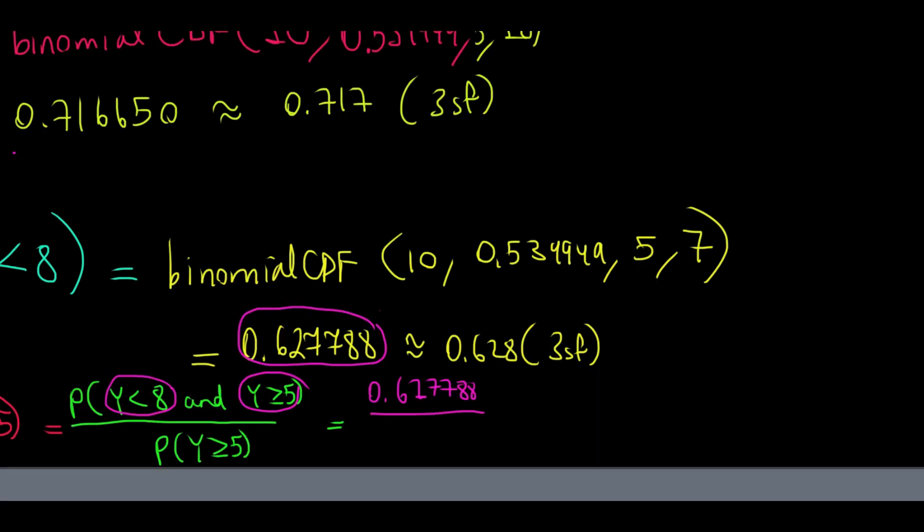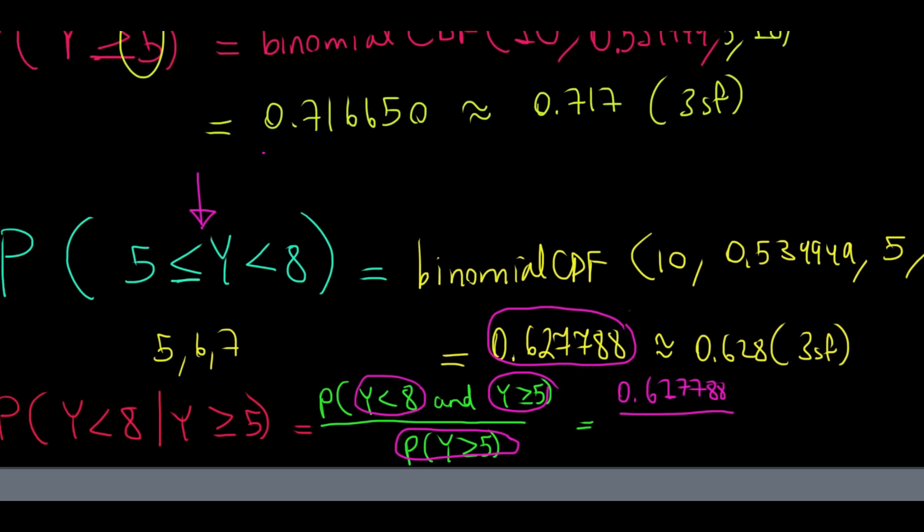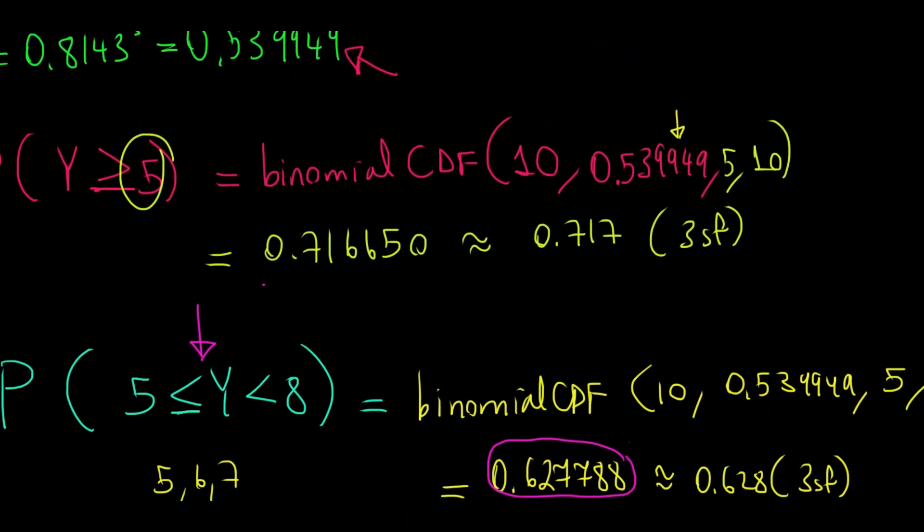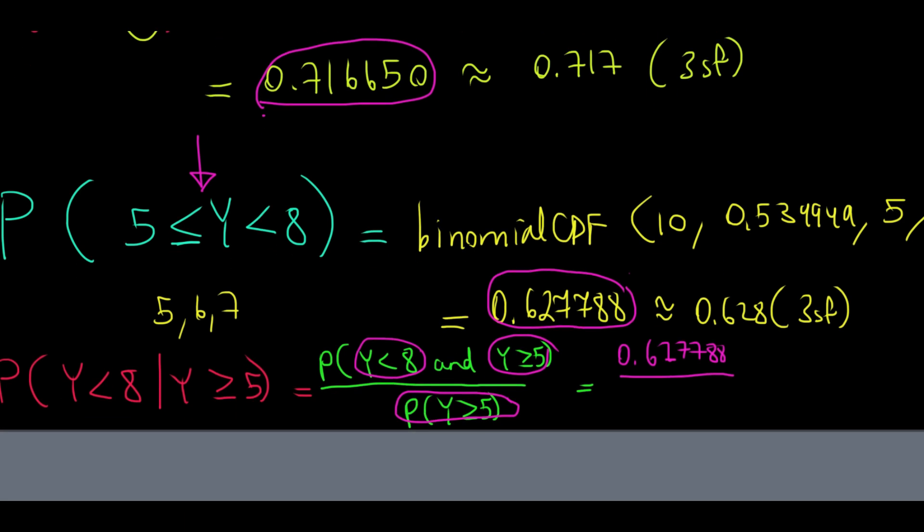Now here, what is the probability of having less than eight and at least five? That's exactly what we did in the previous part. I take the probability computed in the previous part, which is 0.627788. And then for the denominator, the probability that y is at least five, I'll take it from the first part of the question, which is this one 0.716650. I work this out, and I would get 0.876 rounded to three significant figures.